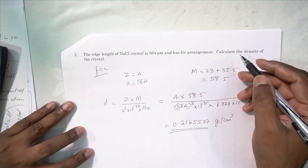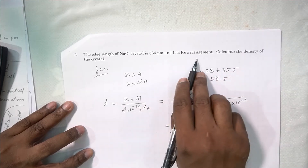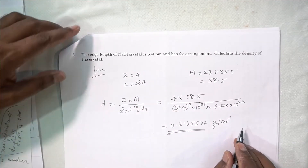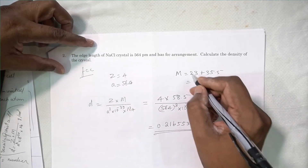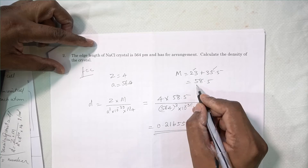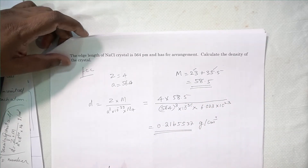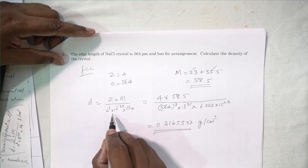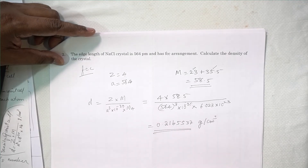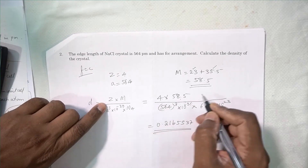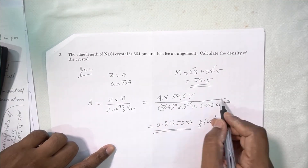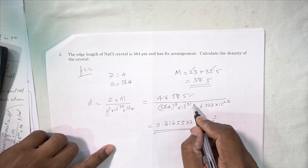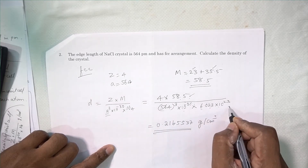Another question: the edge length of NaCl crystal is given as 564 pm and it has FCC arrangement. FCC means Z is equal to 4, and A is given as 564 picometers. Molecular mass of NaCl: Na is 23 and Cl is 35.5, so NaCl is 58.5. Density equals Z into M upon A cubed into 10 to the power minus 30 into Avogadro's number. That is 4 into 58.5, divided by 564 cubed into 10 to the power minus 30 into 6.023 into 10 to the power 23.